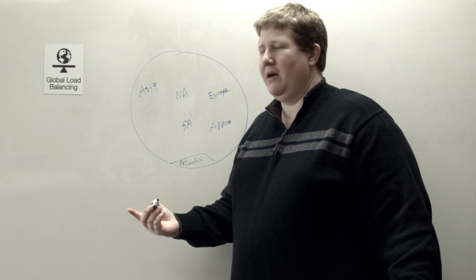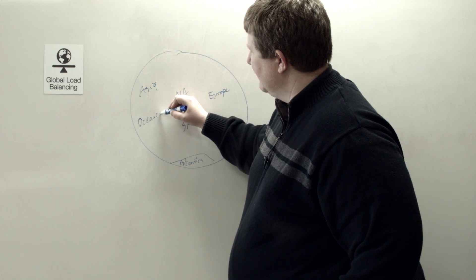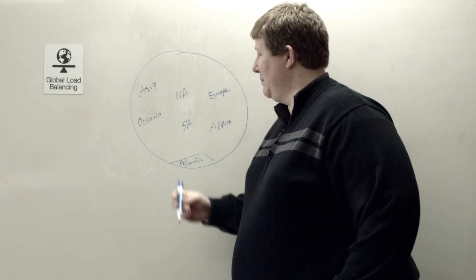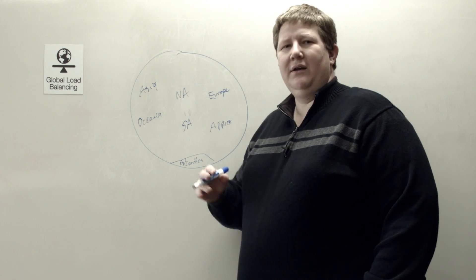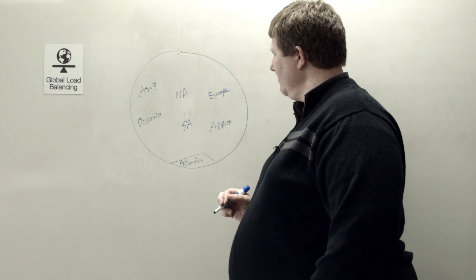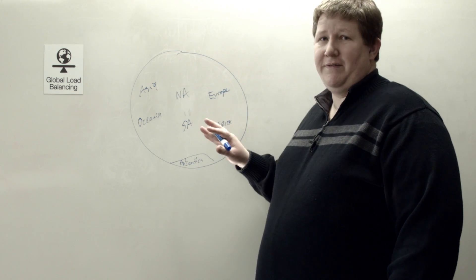And then we actually have another one in there, Oceania. I did not know that was a continent, but that's how it's defined. I thought it was just Australia was the continent, but Oceania. That's New Zealand and Australia and some of the other countries in and around that area. So basically you have these regions available.